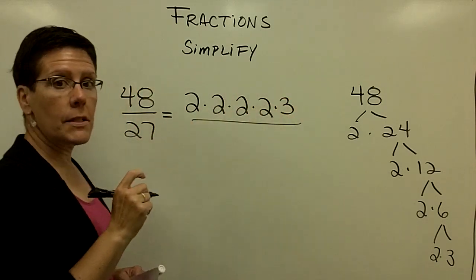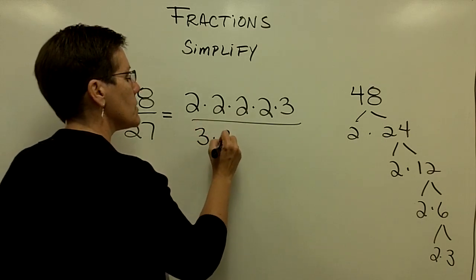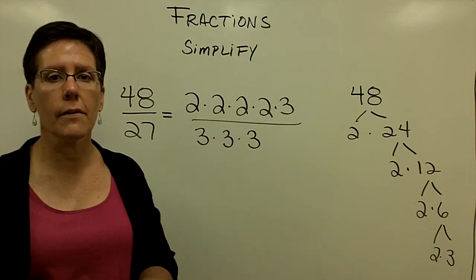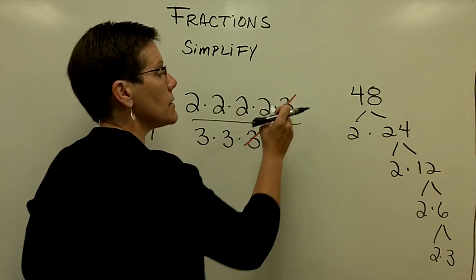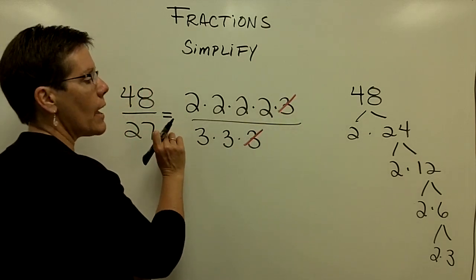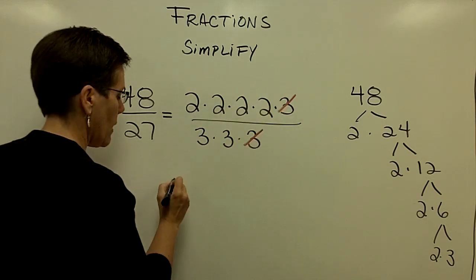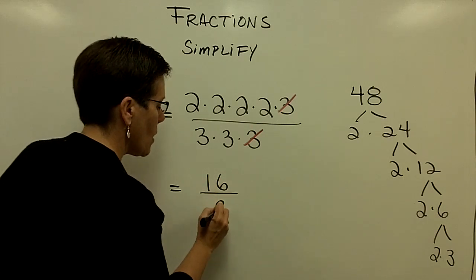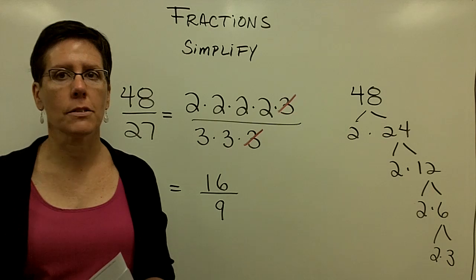The number 27 has factors of 3. It is 3 times 3 times 3 — those are the prime factors of 27. I can remove the common factor of 3 on the top and on the bottom, and there's nothing else that can be removed — no other common factors. In the numerator I will have 16, because 2 times 2 times 2 times 2 is 16, over 9. And I can leave my answer as an improper fraction.